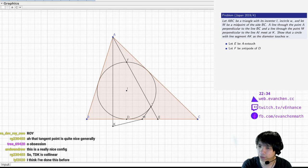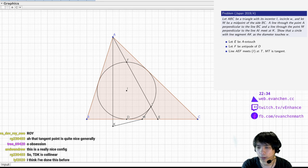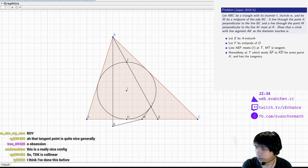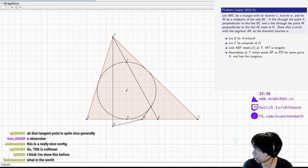So MT is a tangent, so they're reflections. And, well, the homothety that sends... there's a homothety at T which sends AF to KD for some point K and has a tangency. So we're going to redefine K to be... let K prime equals TD intersect the altitude.